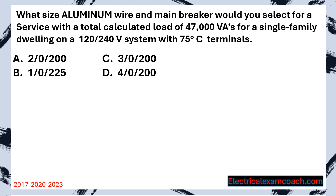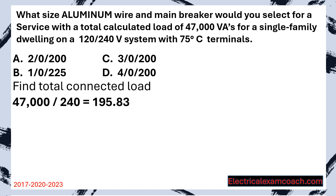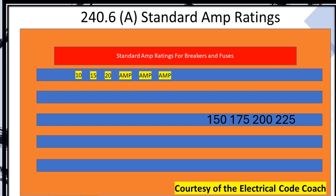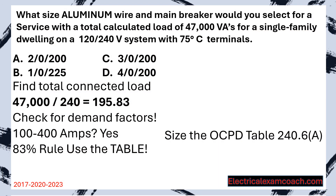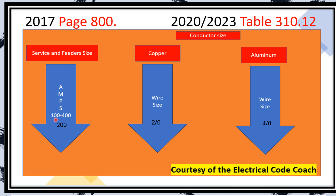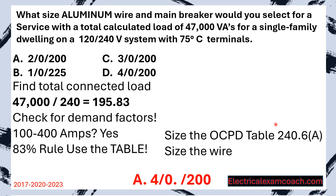What size aluminum wire and main breaker would you select for a service with a total calculated load of 47,000 VAs for a single family dwelling on a 120-240 volt system with 75 degrees C terminals? We divide to get our amperage, check demand factors: between one and 400 amps — yes; single family dwelling — yes. The 83% rule applies. We end up on a 200 amp breaker, just like before. But now the question asks for aluminum. We head to the cheat sheet table, find our size breaker on the left, slide all the way over to the aluminum column, and find that it's 4-aught aluminum.